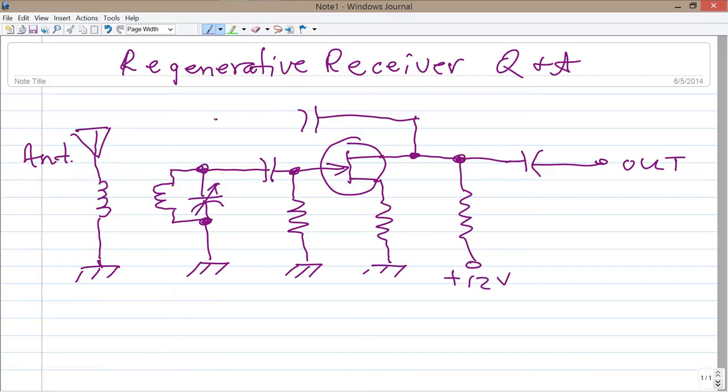To cause the thing to oscillate, we need to orient this internal coil here in the correct direction so as to produce positive feedback so that this circuit will break into oscillation, producing the beat frequency oscillator effect that we want in order to receive signals such as Morse code, phase shift keying, single sideband, frequency shift keying, and those sorts of things.